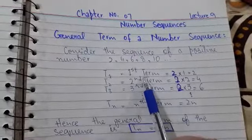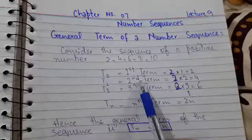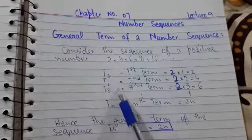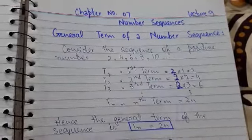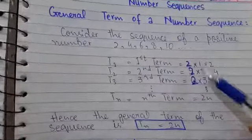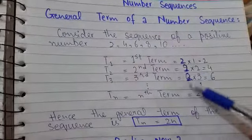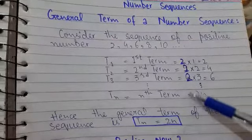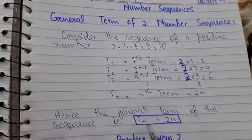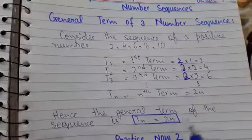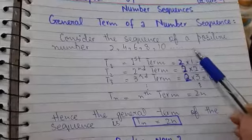T1 represents the first term which is 2, T2 represents the second term which is 4, and T3 represents the third term which is 6. The values 1, 2, 3 and so on represent the value of n, while 2 is constant. So we will write 2 as it is, and the formula becomes Tn = 2n for this sequence, to find any term of this sequence.